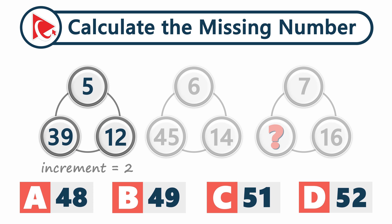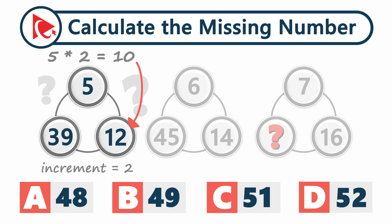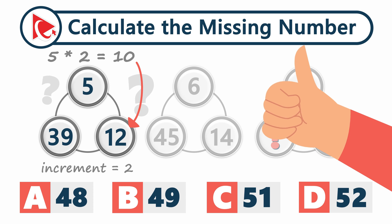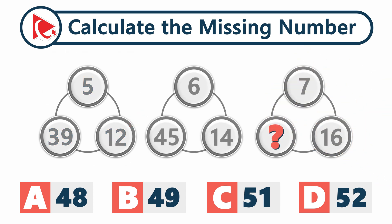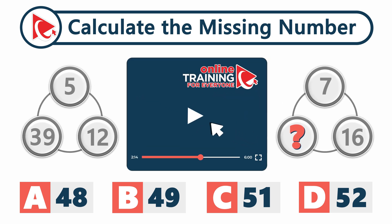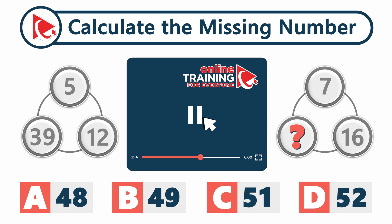If you multiply 5 by 2, you get 10. So the question is: what do you need to do to get from 10 to 12, and is this relevant to the increment we just chose? I know you've got it now. Take a little time to solve this question on your own to find the answer, and remember, it's perfectly okay to pause the video and take your time to think more about the problem.